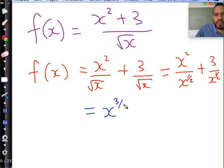So this is going to be to the power of 3 over 2 plus 3 and I bring this one to the top, that's going to be x to the power of negative a half.